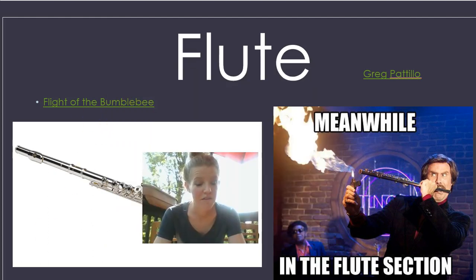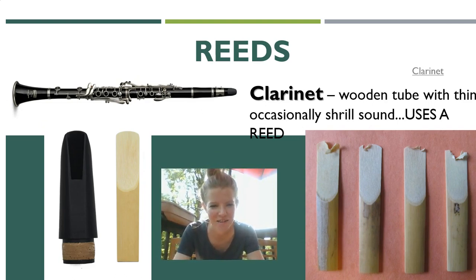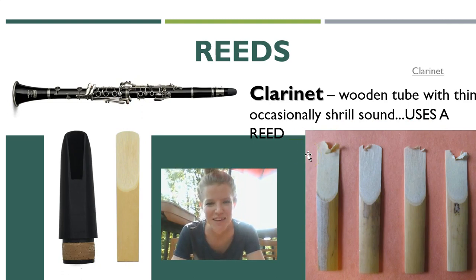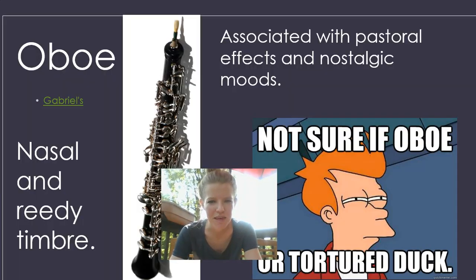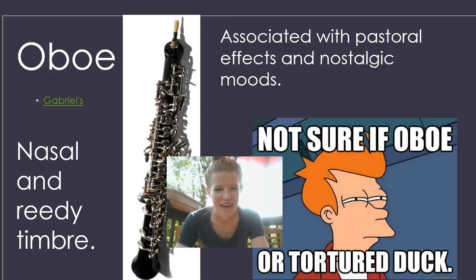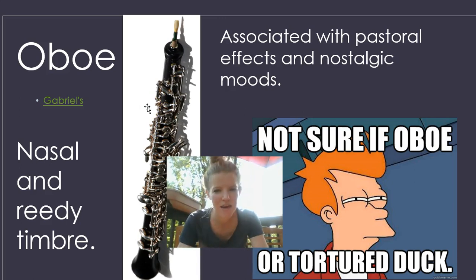Moving on from the flute, we have some instruments that use what are called reeds, which vibrate to change the sound. Our first instrument that uses a reed is the clarinet — the reed vibrates along with the air to change the sound, and the clarinet is usually held straight in front of you. We also have the oboe, which uses what's called a double reed — two reeds smashed together — that vibrates along with the air to change the sound.